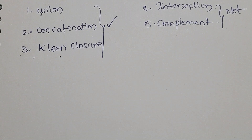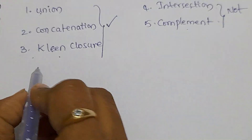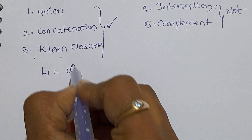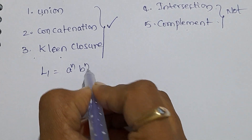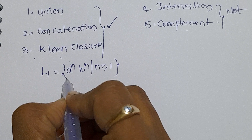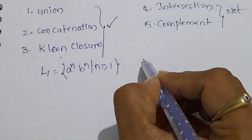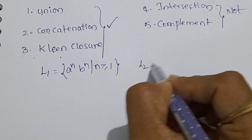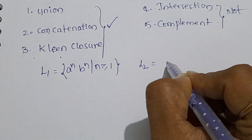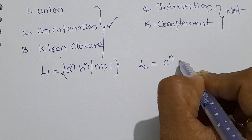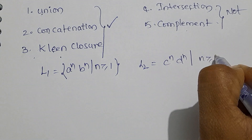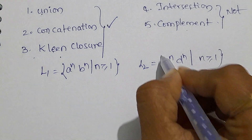Let us suppose I have a language L1 equal to {A^N B^N} where N ≥ 1. This is my first language. And I also have a language L2 equal to {C^N D^N} where N ≥ 1. Observe carefully that according to these language rules, the strings obtained from these two languages are structurally equal.